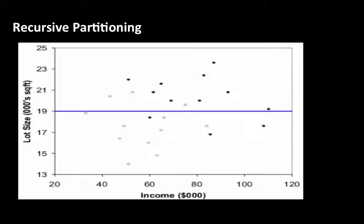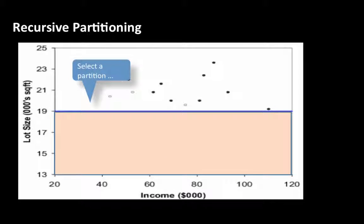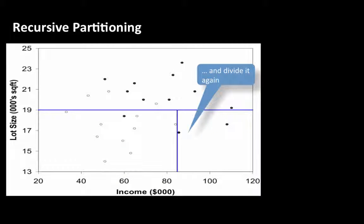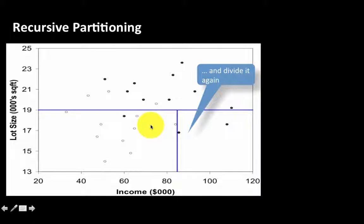This process is called recursive partitioning, because what we do is take each of the two regions and recursively divide them again and again until we have a bunch of cases where each region is as pure as we can get it. The next step selects a partition and an attribute on which to divide it. Here we figured out it's a good idea to divide this partition on income — income greater than or equal to 85 versus income less than 85. Once again, this region is pure with only owners, and this region is almost pure with just one non-owner.